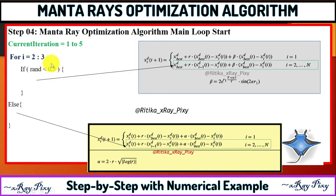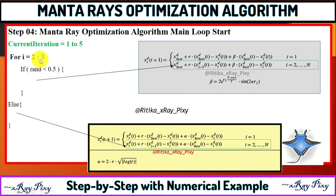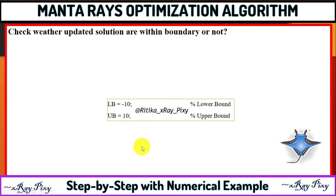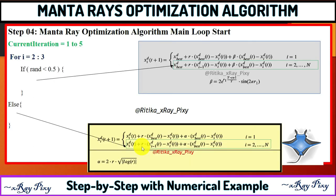Again we select a random value and check this condition. If this condition is true we perform cyclone foraging, otherwise chain foraging. Here i runs from 2 to 3 (i.e., 2 to population size), and if the condition is true we perform cyclone foraging, otherwise chain foraging.